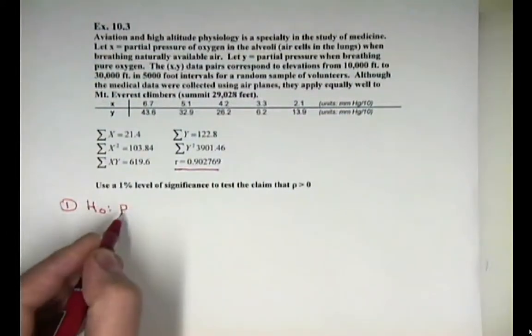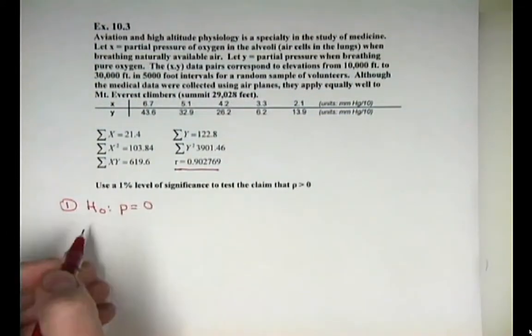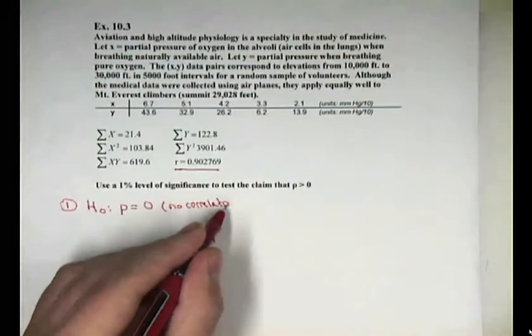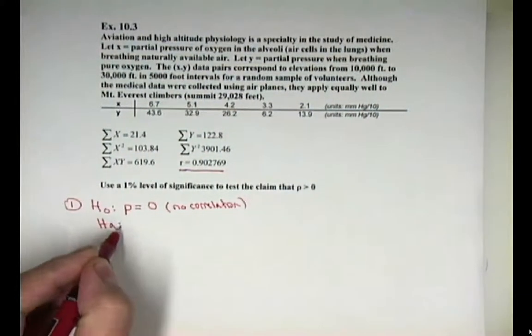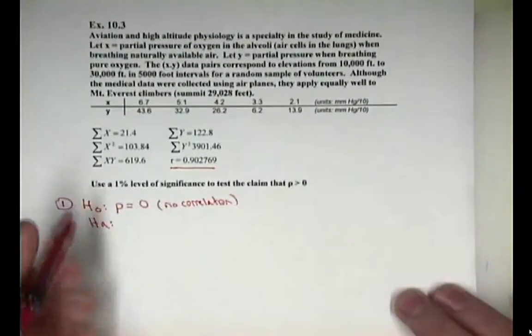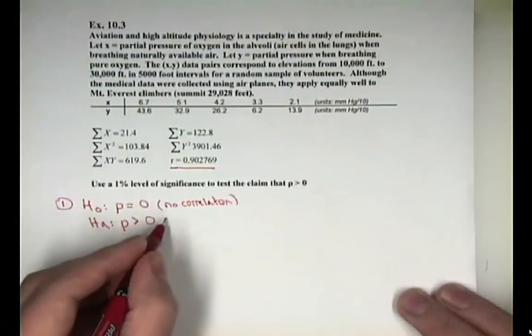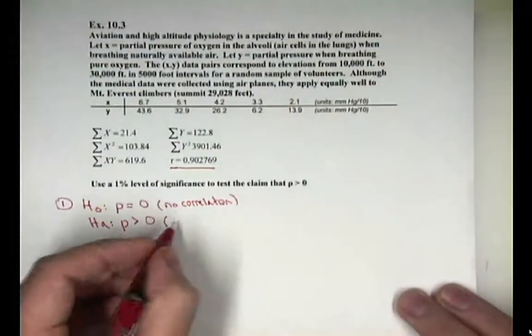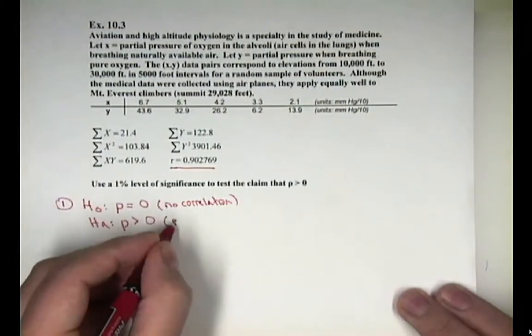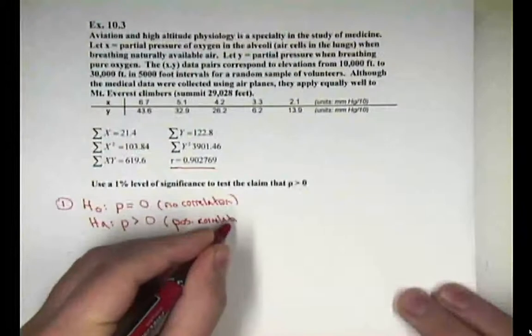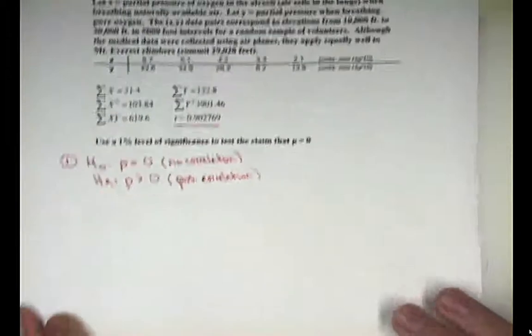H naught, rho, meaning the correlation coefficient for the population, is equal to zero, meaning no correlation. And the alternative, they wanted us to test the claim that there was a positive correlation going on between the x, meaning partial pressure, and the y. Partial pressure would be the breathing pure oxygen. It's a medical example. And you know that I don't know much about medical stuff. So I'm just going to do the statistics for you. And all you nursing majors can read all about it. So here we're testing for a positive correlation. That's step one.